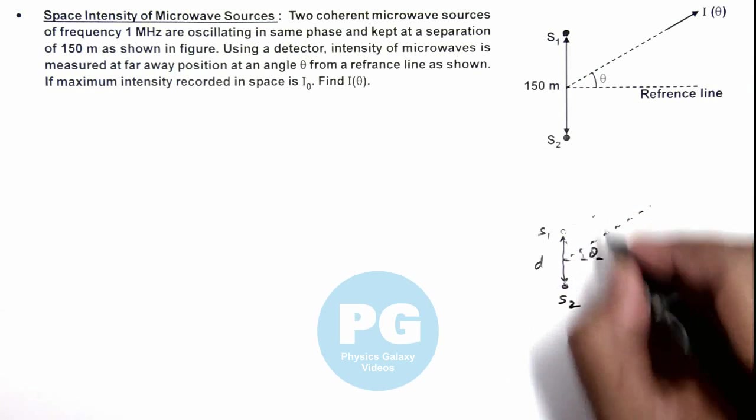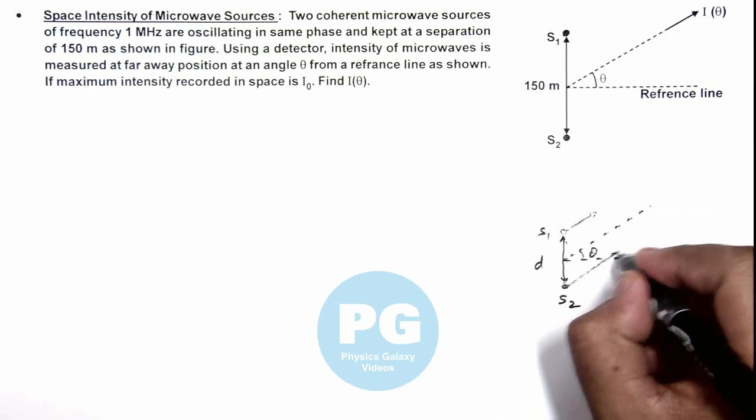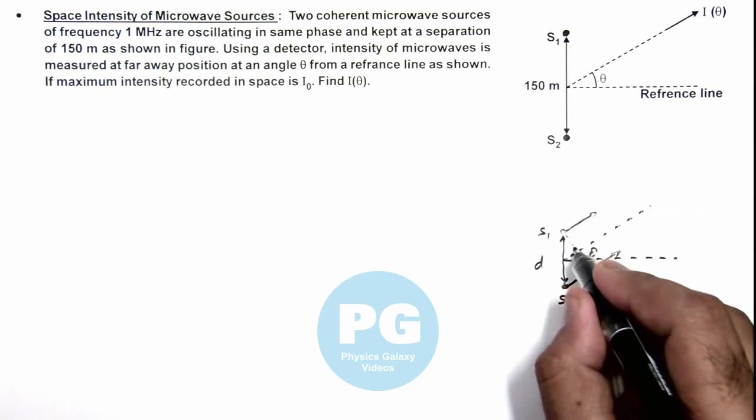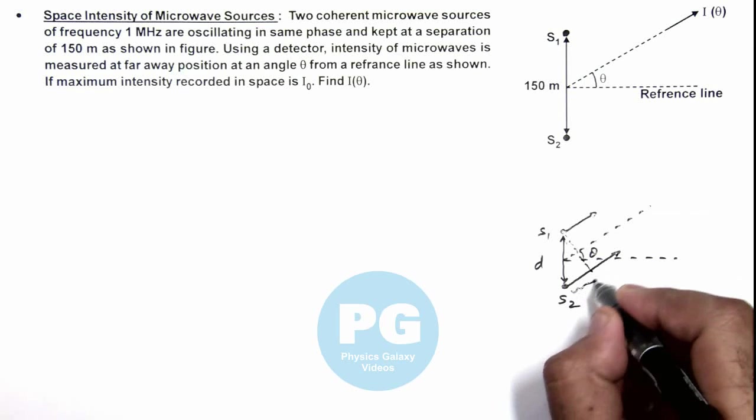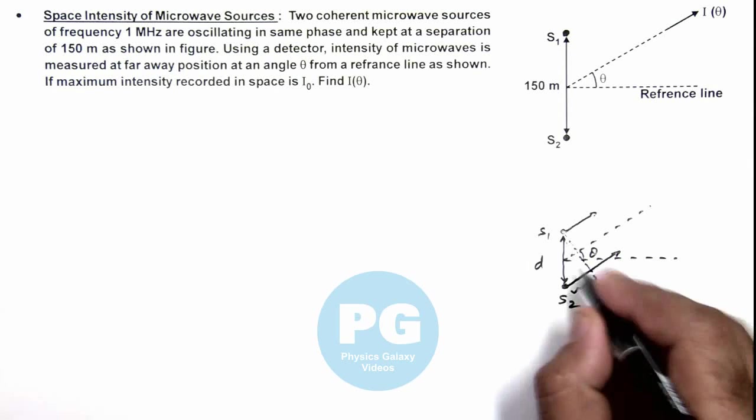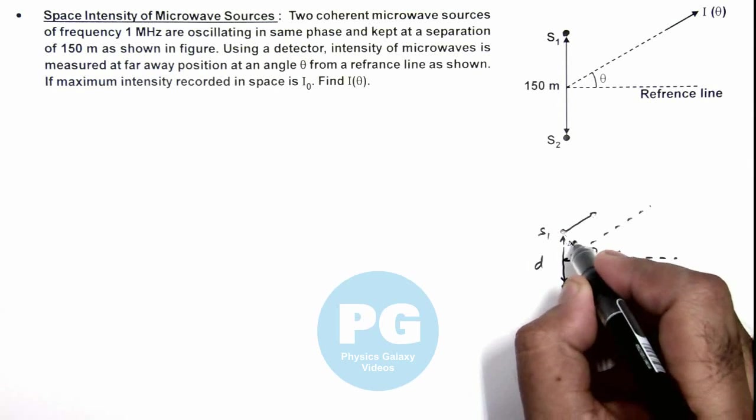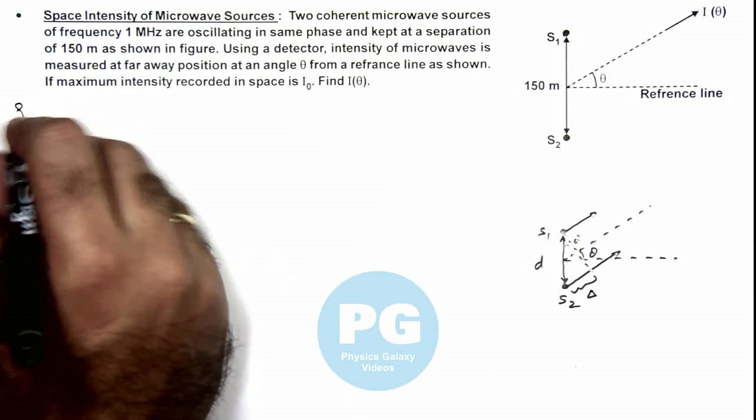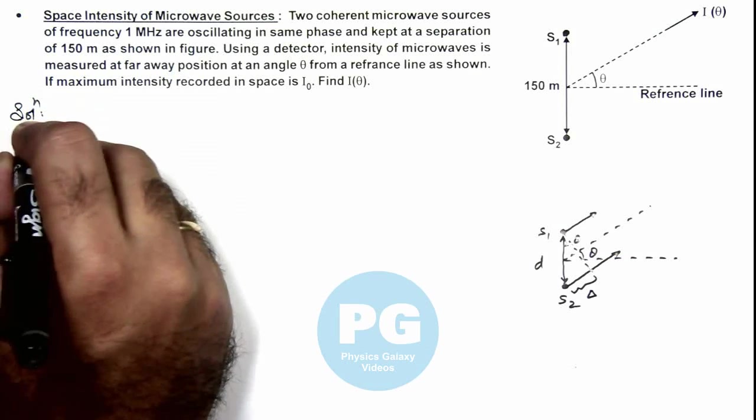Then with respect to the reference line, if we consider a direction at an angle theta, in the direction the two waves which are going from S1 and S2, the path difference in the two waves will be given by this distance delta. And if this angle is theta, this is also theta.